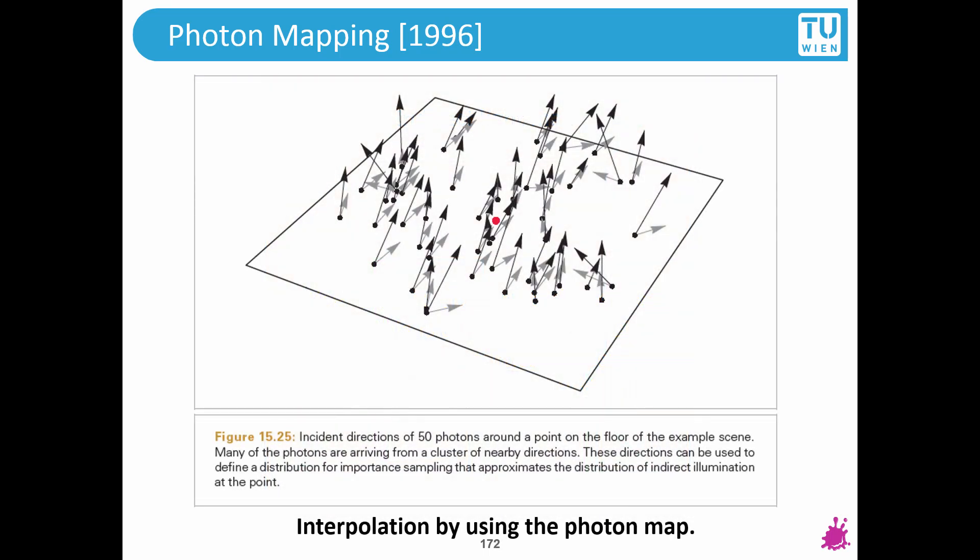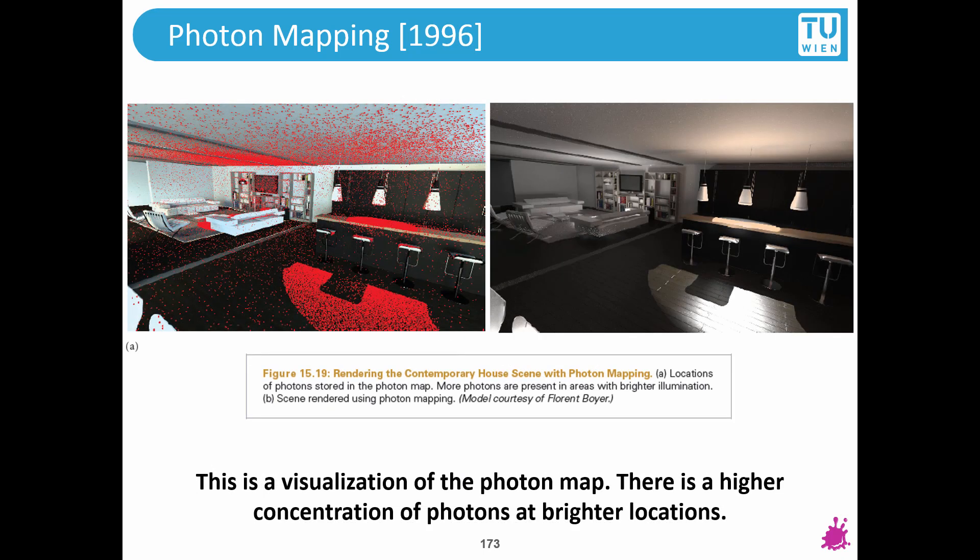This is an example on how to use all this information in the photon map, so I would be interested in the incident radiance at the red dot. And what I can do is use the information from the nearby photons, and I would average all this information to get an estimation for the red dot. And you can see that the brighter regions of the image seem to have more photons in the photon map. Why is that? Well, it's simple. It's because we are shooting photons out of the light sources, and these are the regions that are very visible from the light source.